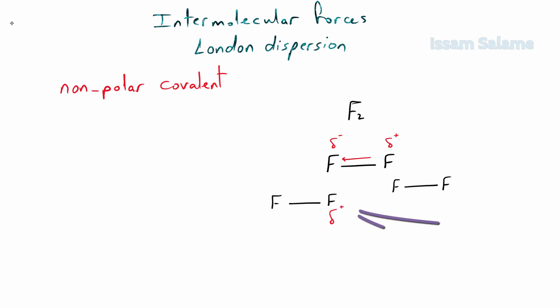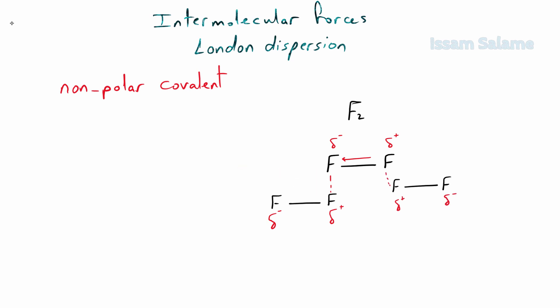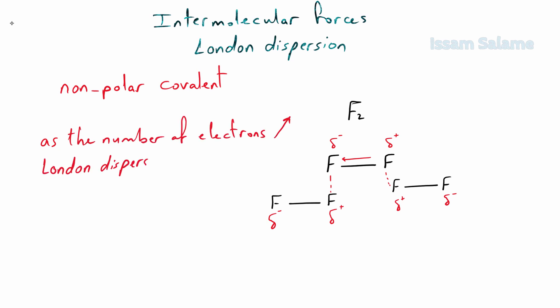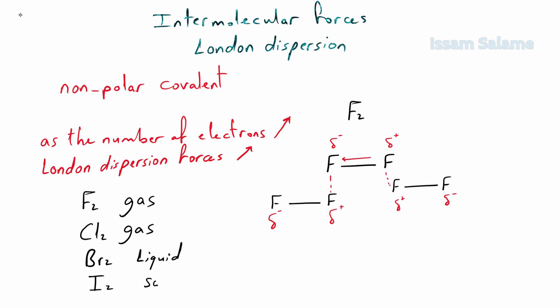When electrons are momentarily closer to one atom, that side of the molecule becomes momentarily negative and the other side momentarily positive. This momentarily negative side repels electrons in the adjacent molecule, inducing a momentarily positive side — the attraction between these momentarily charged sides is called London dispersion forces. As the number of electrons increases, London dispersion forces become stronger. This is evidenced by the physical states of halogens at room temperature: fluorine and chlorine are gases, bromine is a liquid, and iodine is a solid, because going down the group the number of electrons increases, strengthening London dispersion forces.